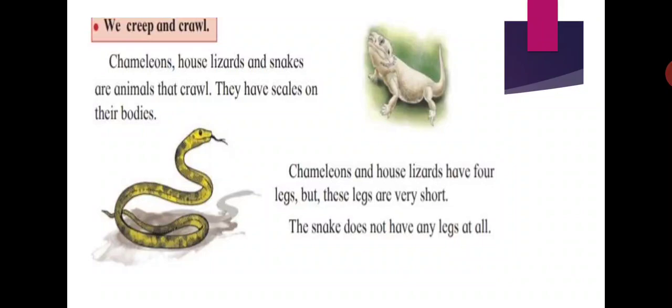We creep and crawl. Chameleons, house lizards, and snakes are animals that crawl. They have scales on their bodies. Chameleons and house lizards have four legs, but these legs are very short. The snake does not have any legs at all.